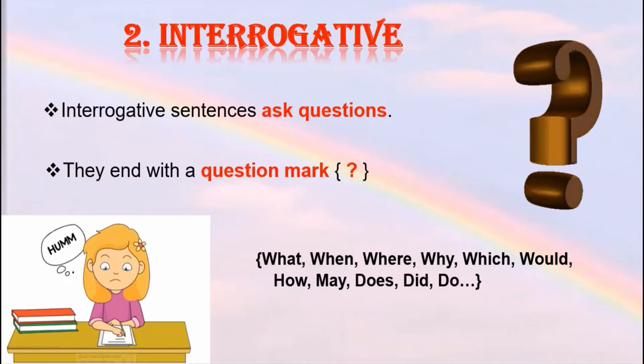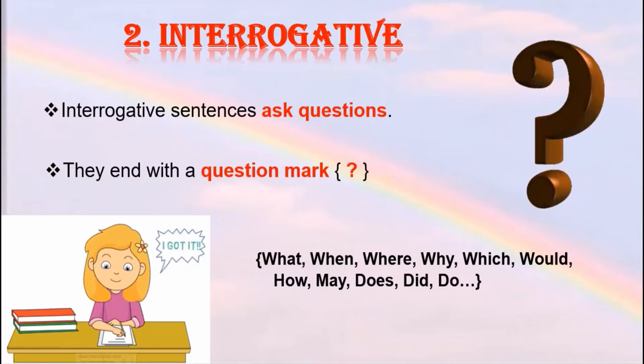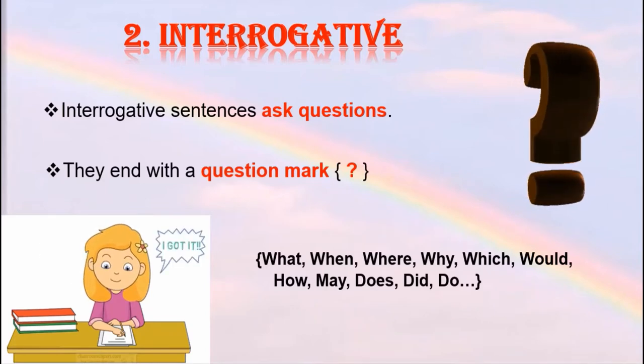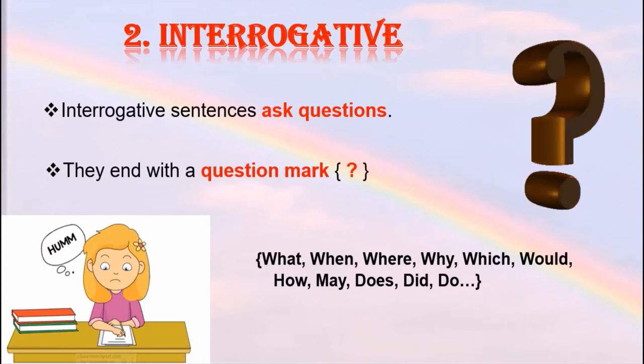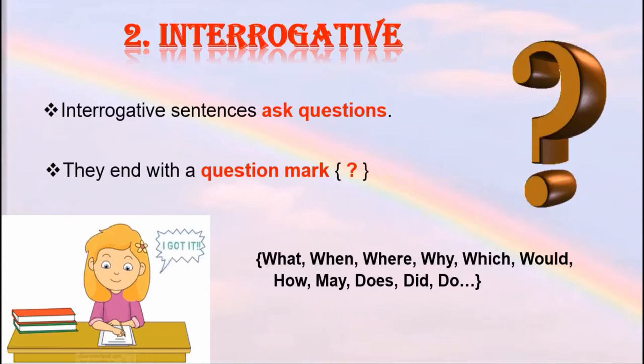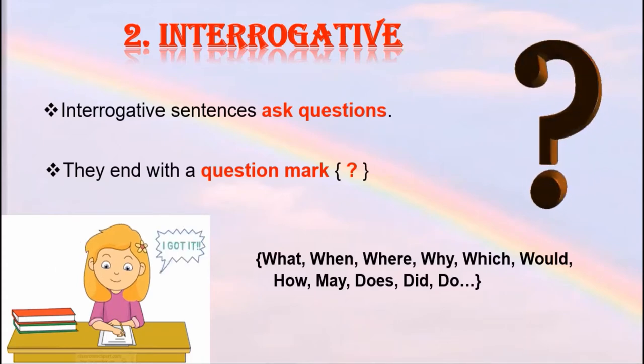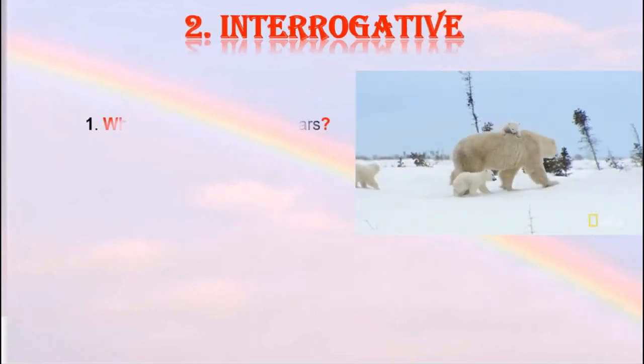Quite a few sentences also begin with how, does, did, do, and so on. Now let us look at some of the examples: 'Where do you find polar bears?'